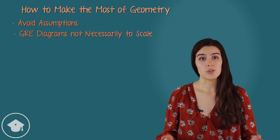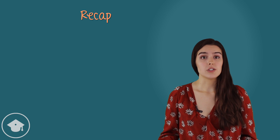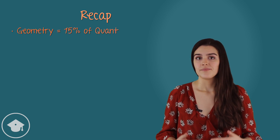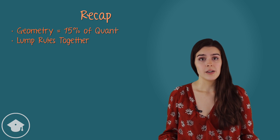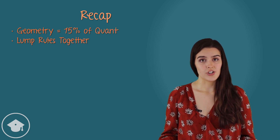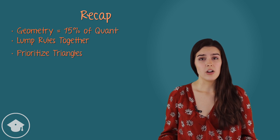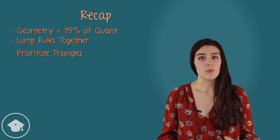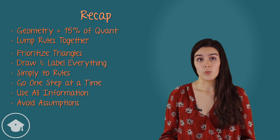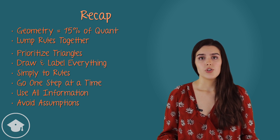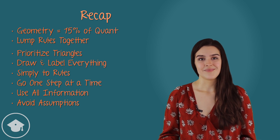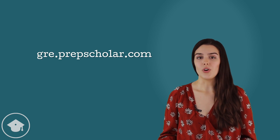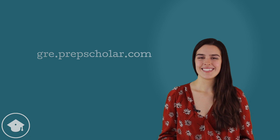Same with parallel lines — we need to be told. And that's our Geometry 101. To recap: geometry accounts for about 15% of quant problems. There are a lot of geometry rules and formulas, but many can be lumped together for easier memorization. If we prioritize any content knowledge, it should be triangles. Approach the question wisely by drawing and labeling everything we know, simplifying down to concepts we can work with, going one step at a time, considering each piece of information, and avoiding assumptions. Thanks again for watching, and check us out at gre.prepscholar.com for more great GRE content. See you next time!